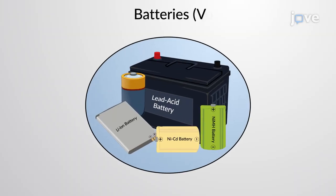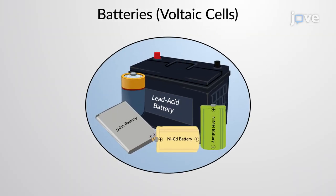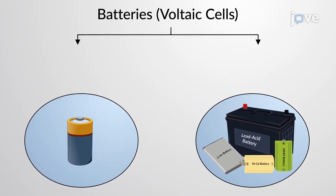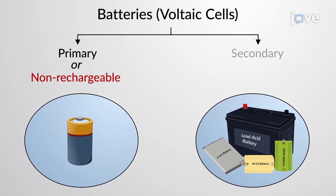Batteries are voltaic cells used as portable electrical sources. They are categorized into primary, or non-rechargeable, and secondary, or rechargeable batteries.